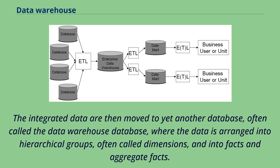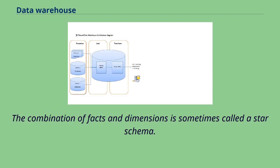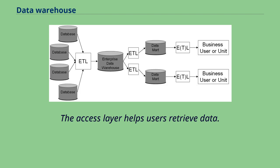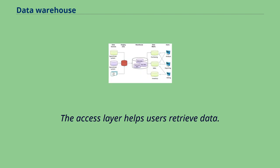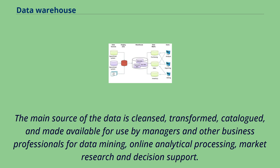The integrated data are then moved to yet another database, often called the data warehouse database, where the data is arranged into hierarchical groups often called dimensions, and into facts and aggregate facts. The combination of facts and dimensions is sometimes called a star schema. The access layer helps users retrieve data. The main source of the data is cleansed, transformed, catalogued, and made available for use by managers and other business professionals.